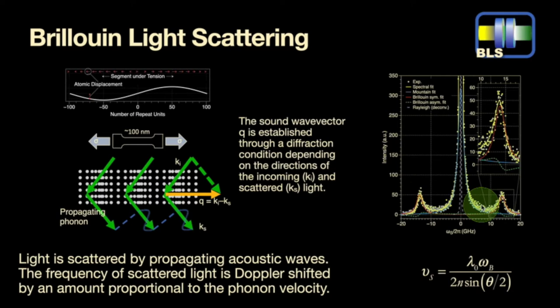What you get out is a typical spectrum on the right here. The distance between the central peak which is the Rayleigh peak and either of these Brillouin peaks, anti-Stokes and Stokes, that distance in frequency gives us a measure of the velocity of sound. And once you know that and you know the density of the material then you can calculate the elastic moduli.